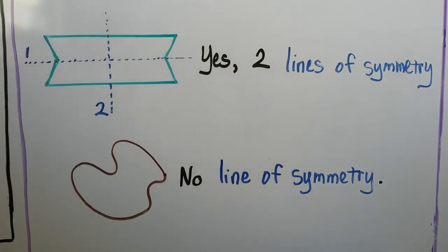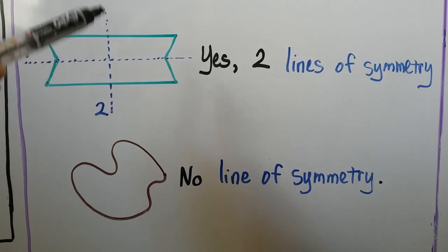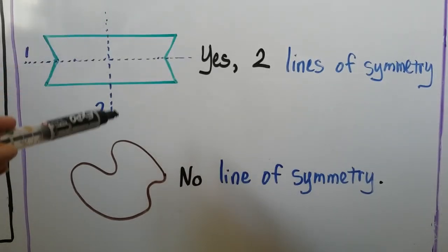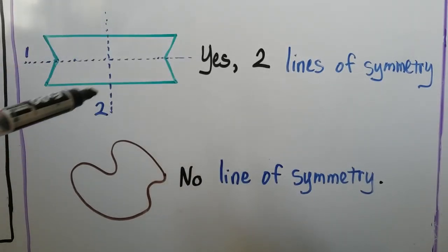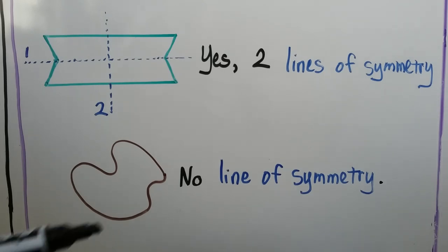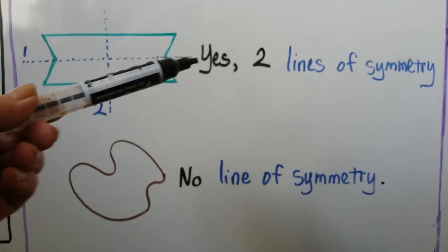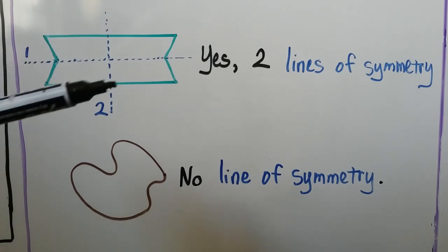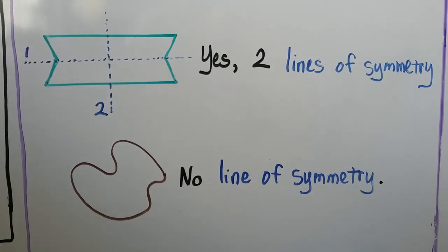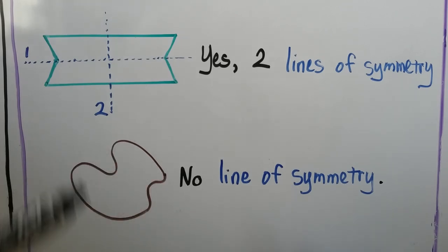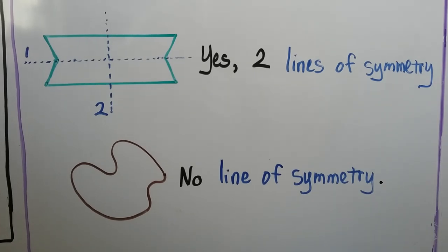For this green shape, we could fold it right here using that as the line of symmetry and put the left side folded over onto the right side and it would coincide with itself. It would also work if we had the line of symmetry going horizontally and folded the bottom over to the top. And then this one has no line of symmetry — there's no way that we could fold this to make it coincide with itself. It's too strange of a shape.